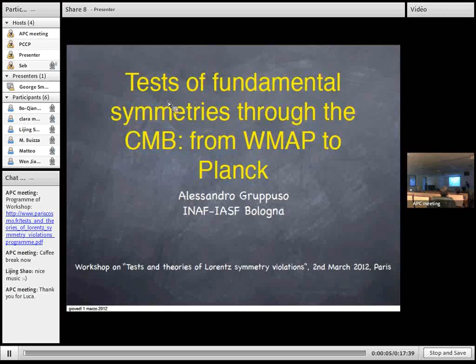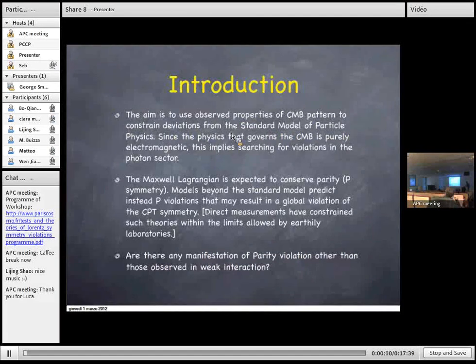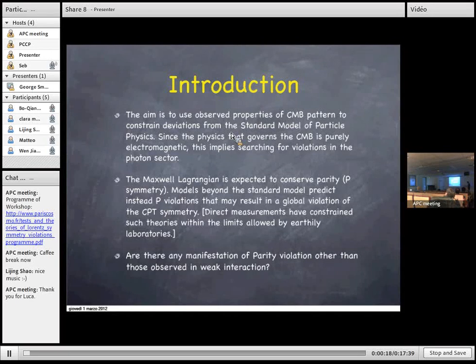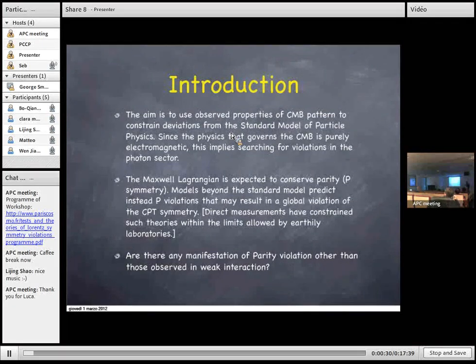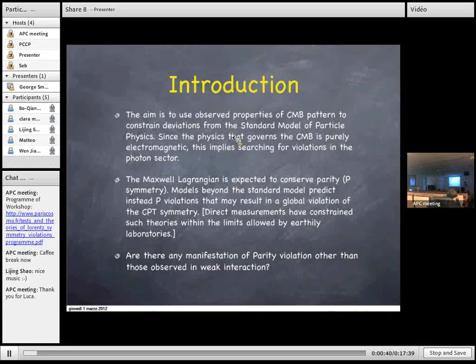Okay, so I will talk about the tests of fundamental symmetries through the CMB from WMAP to Planck. The aim here is to show how to use the observed properties of the CMB pattern to constrain deviations from the standard model of particle physics. Since CMB physics is purely electromagnetic, this means that we are looking for violations in the photon sector of the particle physics model. So the question at the end is, are there any manifestations of parity violation other than those that are observed in the weak interactions?